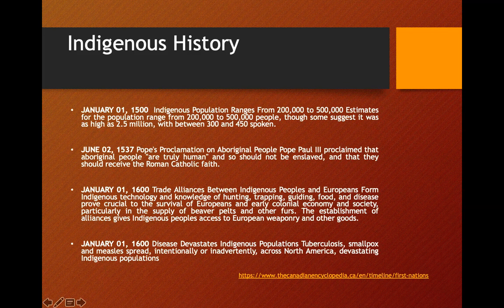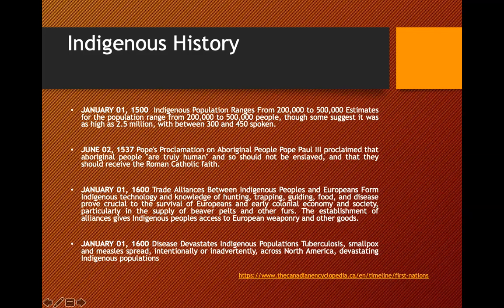In 1600, diseases devastated Indigenous populations. TB, smallpox, and measles spread intentionally or inadvertently across North America. In 1539, the Pope issued a proclamation regarding Aboriginal people. By 1600, trade alliances between Indigenous people and Europeans were established. Indigenous technology and knowledge of hunting, trapping, guiding, food, and management of diseases was crucial to the survival of the European and early colonial economy and society.